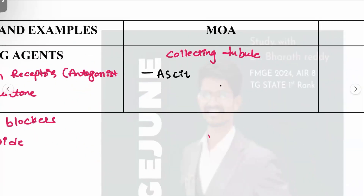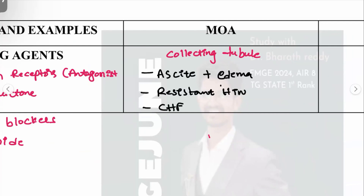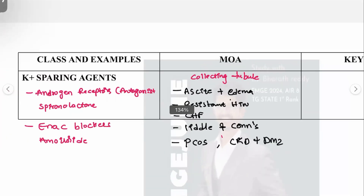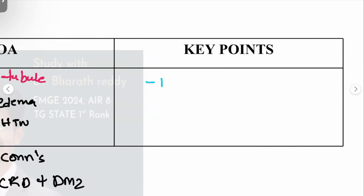Potassium-sparing diuretics are used in: ascites with edema, resistant hypertension, congestive heart failure, Liddle's syndrome, Conn's syndrome, PCOS, and CKD with type 2 diabetes mellitus.